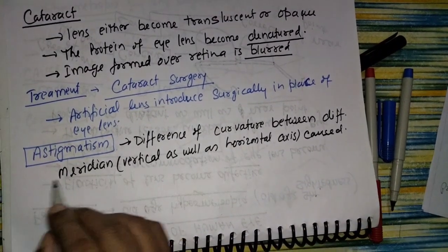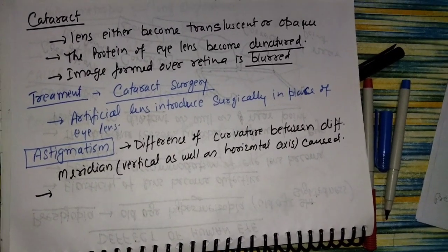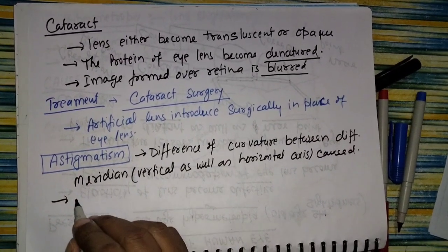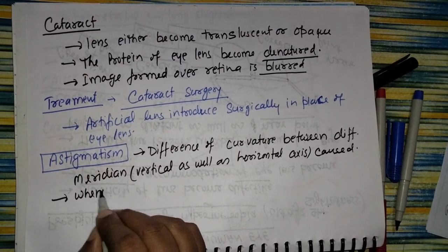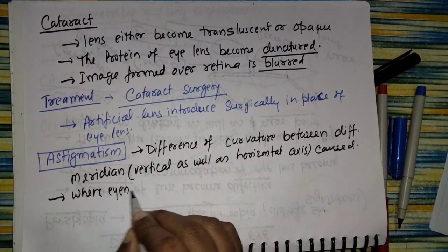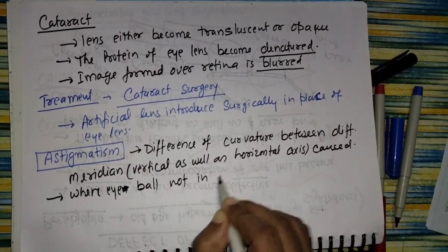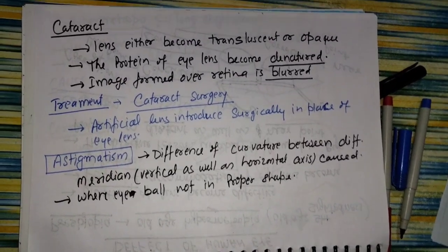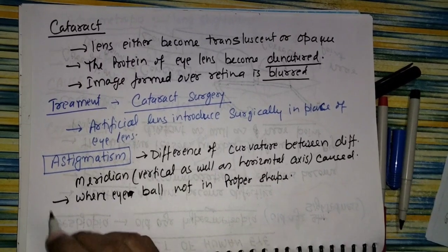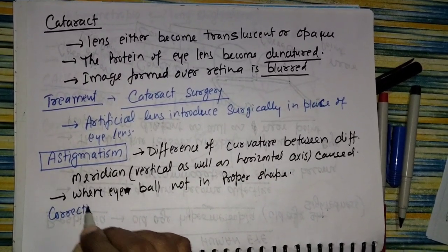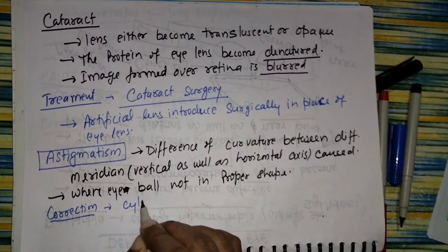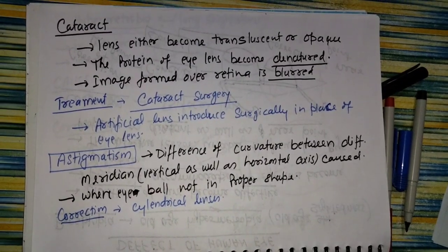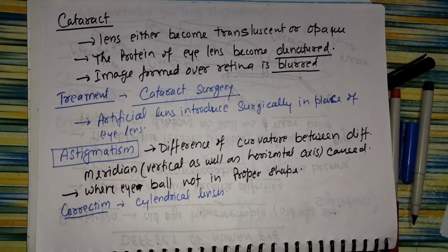The cause is that generally the eyeball is not in its proper shape. When the eyeball is not in proper shape, this type of defect occurs. For correction, cylindrical lenses are used along a particular axis.